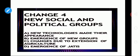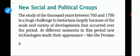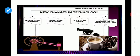Next, we will look at the fourth change: new social and political groups. New technologies made their appearance, as did the emergence of new groups and changes due to the extension of agriculture. For historians, it is a huge challenge to study 1000 years between 700 and 1750. Within just 10 years there is a lot of development, and over 1000 years there were many changes — like the Persian wheel in irrigation, the spinning wheel for weaving, and firearms for combat.